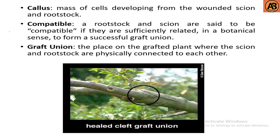Here are some terminology related to graft union. Callus is a mass of cells developing from the wounded scion and rootstock. Compatible means a rootstock and scion are said to be compatible if they are sufficiently related in a botanical sense to form a successful graft union.